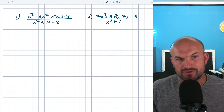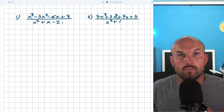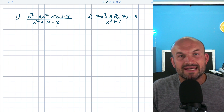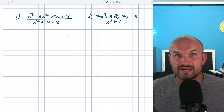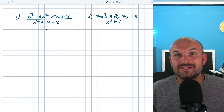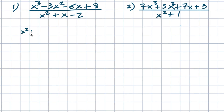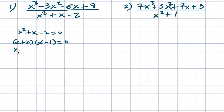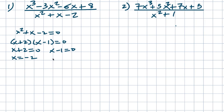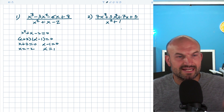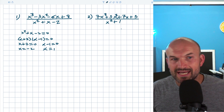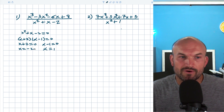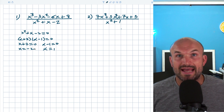Looking at this first example, you can see my denominator is X squared plus X minus two. I always tell students when doing synthetic division to set your denominator equal to zero to solve for K. So let's go ahead and do that here. I factored the quadratic and applied the zero product property to set them both equal to zero and solve. Therefore I have two values for K: negative two and positive one.